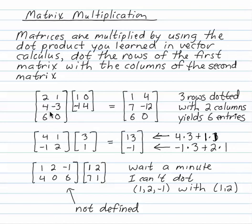So here I have a 3 by 2 matrix multiplied by a 2 by 2 matrix. I'm going to take 3 rows dotted with 2 columns. That gives me 6 entries.